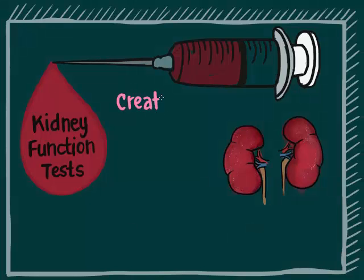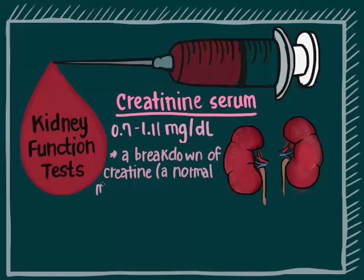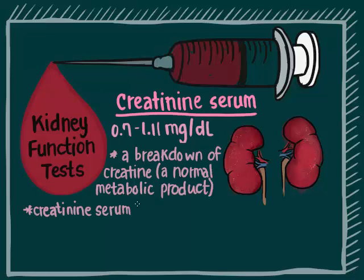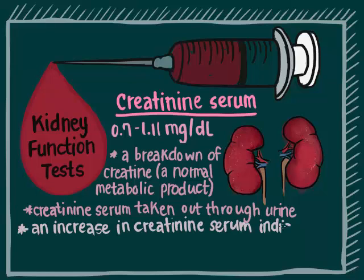Creatinine serum has a normal range of 0.7 to 1.11 milligrams per deciliter. Creatinine is a breakdown product of creatine, a normal metabolic byproduct. It is removed from your body by the kidneys and passed out in the urine. An increase in blood creatinine indicates kidney disease or damage.